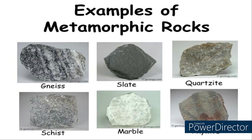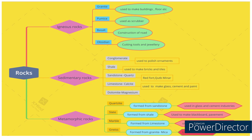Metamorphic rocks are of different types. Quartzite, formed from sandstone, is used in glass and cement industries. Slate, formed from shale, is used to make blackboards and pavements. Marble, formed from limestone, is used to make buildings and statues. Gneiss, formed from granite, is used to make statues.